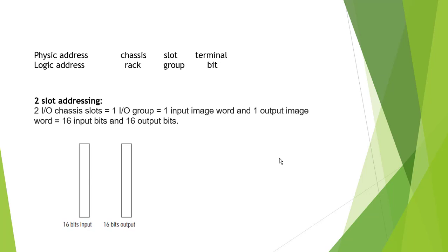First, let's talk about two-slot addressing. Two-slot addressing means two slots equal one IO group — equal one input image word and one output image word. So two modules make one IO group, which includes 16 input bits and 16 output bits.